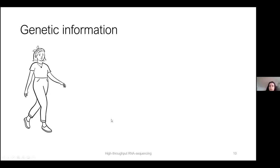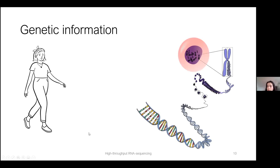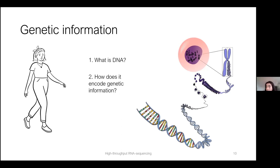Your body is composed of many cells, and each cell carries all the information required to create and maintain your body. This genetic information is carried by a macromolecule called DNA. There are two things I want to cover: what is DNA, and how does it encode genetic information - how does one molecule carry instructions on how to make and maintain a body?